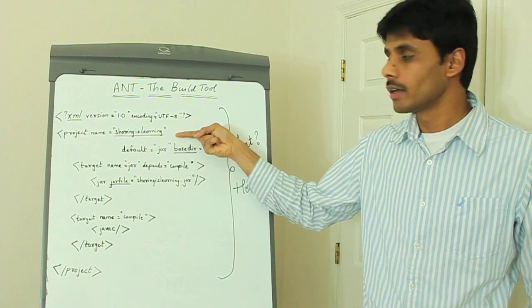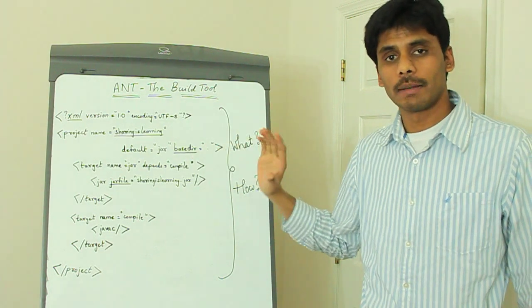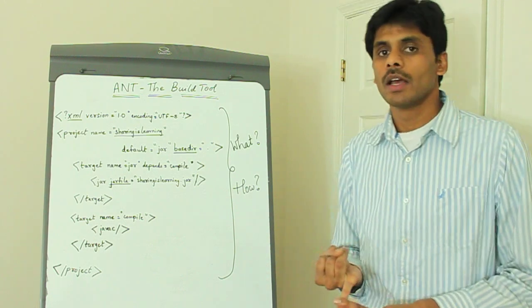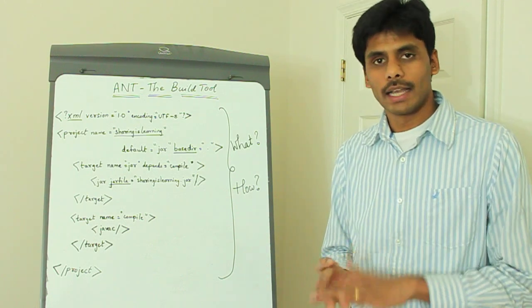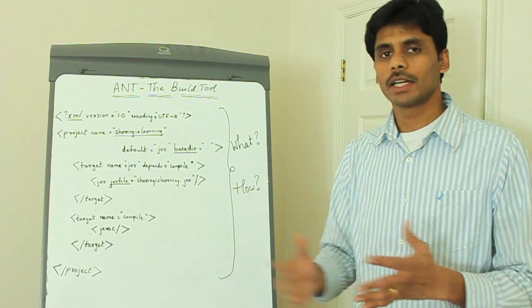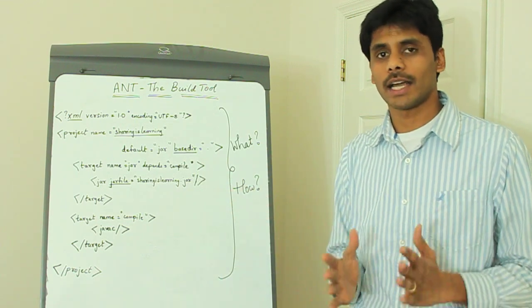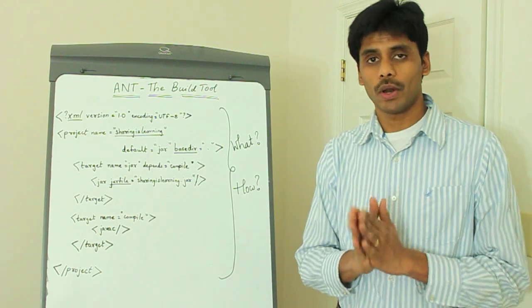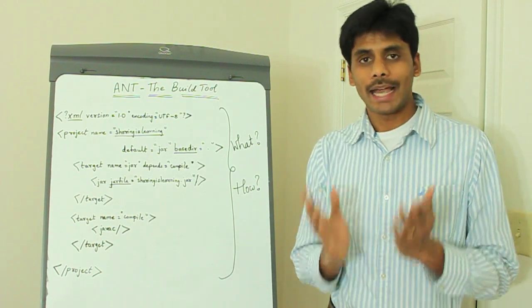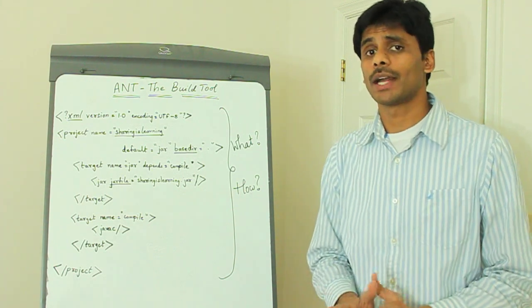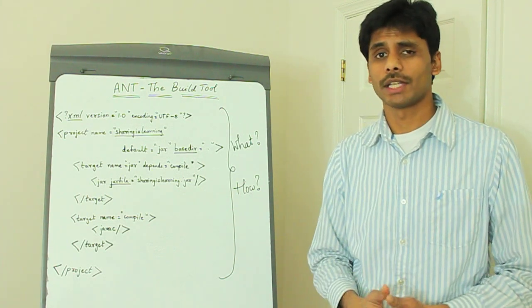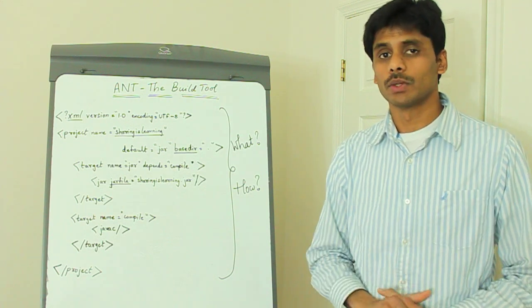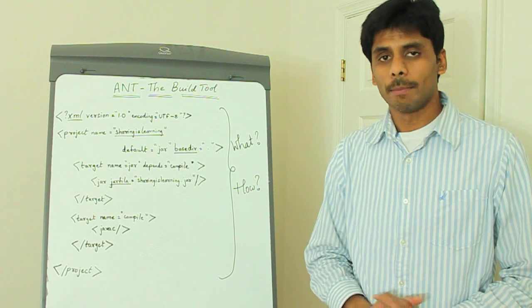It starts with the project root element. Within the project, we can define multiple targets. Targets are nothing but logical units of work like compilation, jarring, building a war file, copying files from one place to another. It could be anything. As I said, there are multiple tasks, and you need not remember all these tasks. You just need to have an overall idea of what Ant supports. And you can always go back to Ant documentation - it's just like referring to your Java JDK API documentation. You can always refer back to that and start using those tasks to come up with your own Ant build.